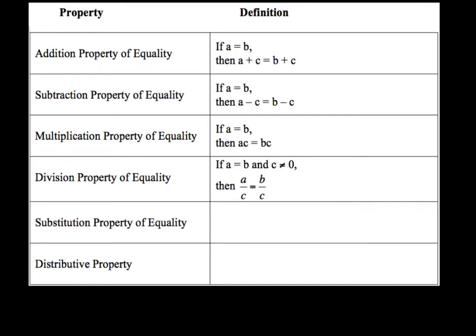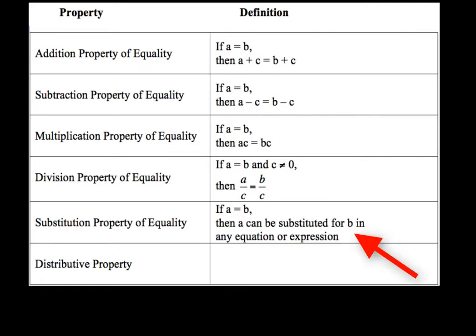Now the substitution property of equality. This property says if A equals B, then you can take A out and substitute B in any equation or expression. So if A equals B, A can go out, B can go in, in any kind of equation or expression.